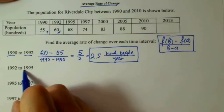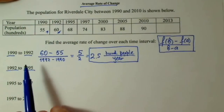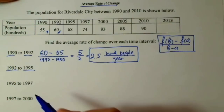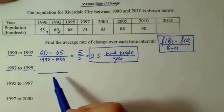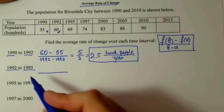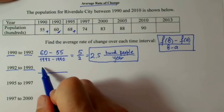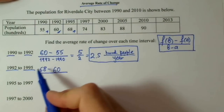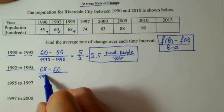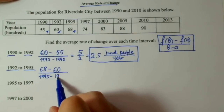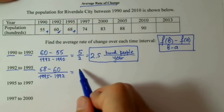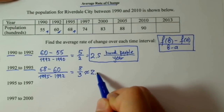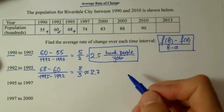Let's take the next example. The next time interval is 1992 to 1995. Pay attention — this time interval is different: it was 2 years before, now it's 3 years. Again using the basic formula: change in output — 1995 is 68 minus 1992 which is 60 — over change in input: 1995 minus 1992. We have 8 over 3, which equals approximately 2.7. Don't forget about units — it's very important for interpretation.